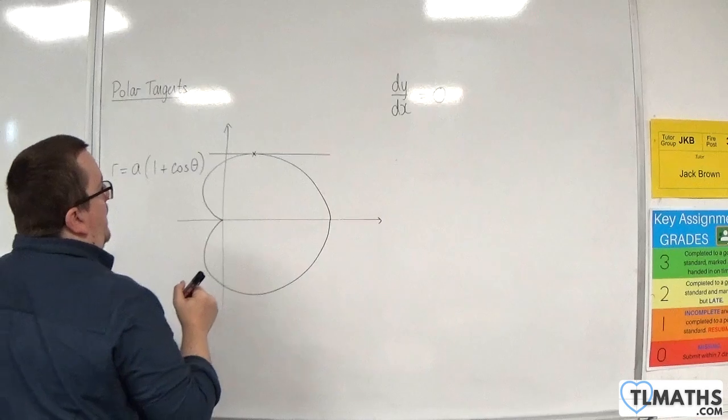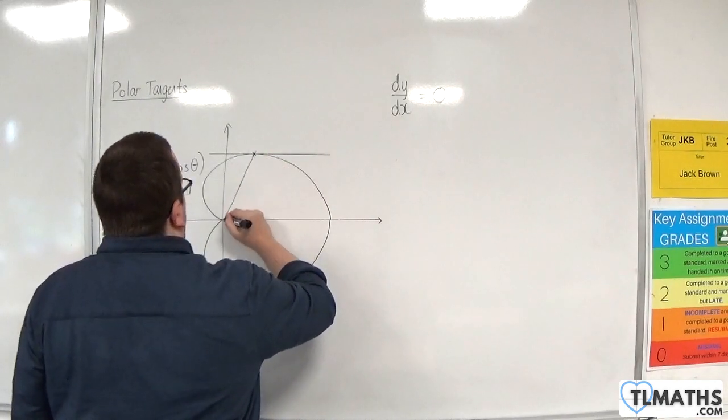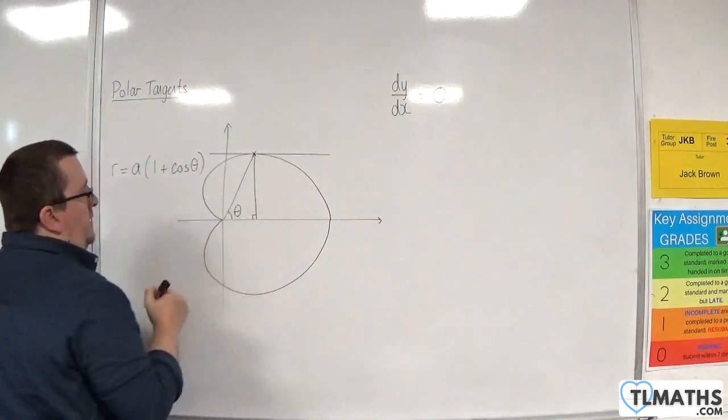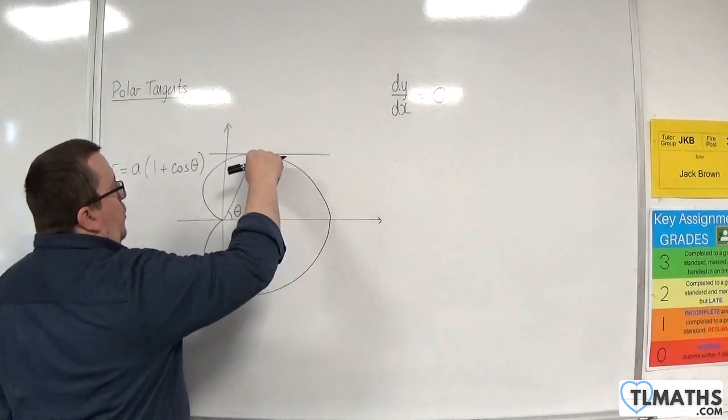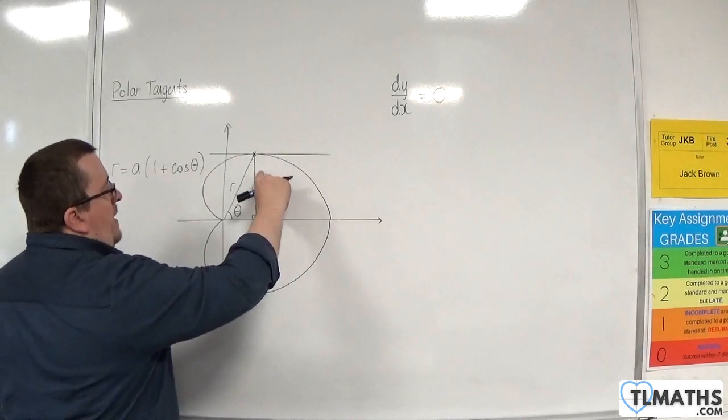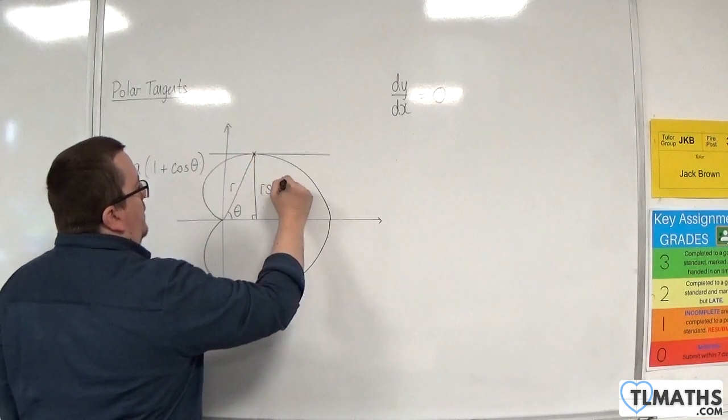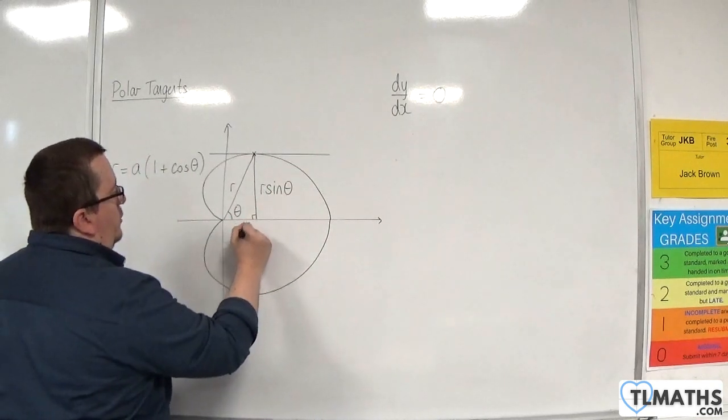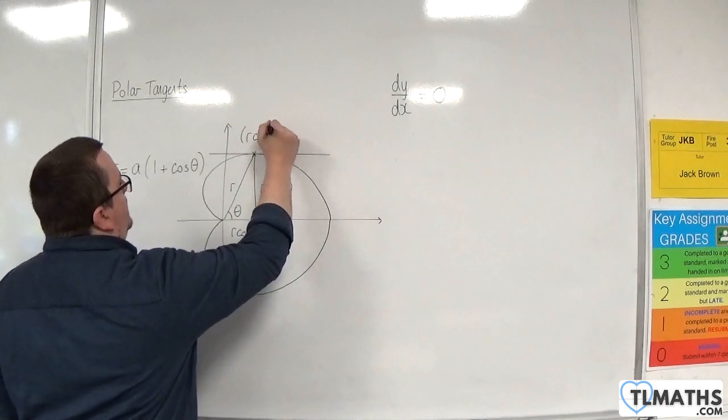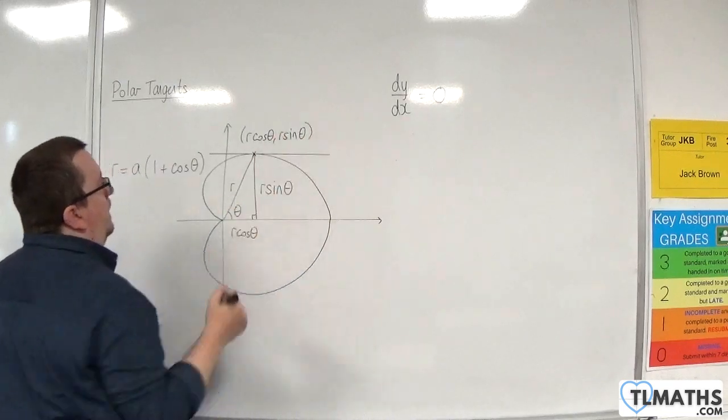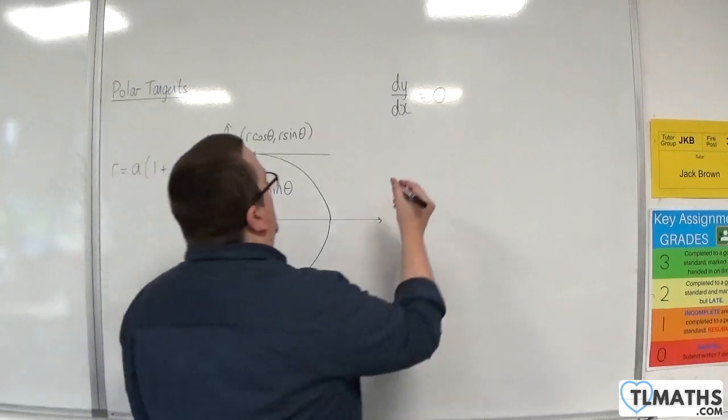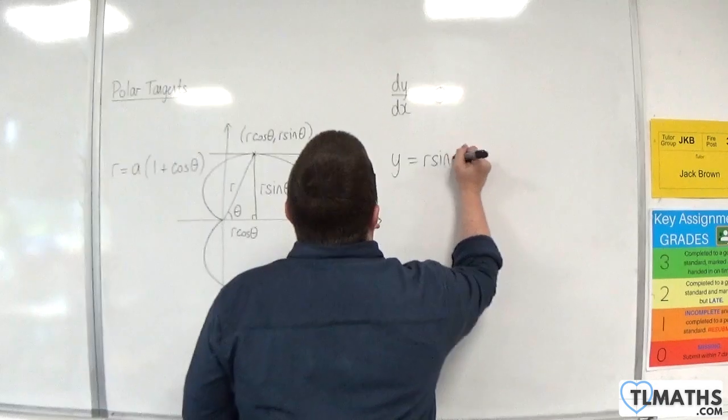Now if we draw a right-angled triangle, where that is my angle theta, then the coordinates of this point, if this is r, that length there will be r sine theta, and this length will be r cosine theta. So the coordinates of my point will be r cosine theta, r sine theta. So the y coordinate of the point I am interested in will be y equals r sine theta.